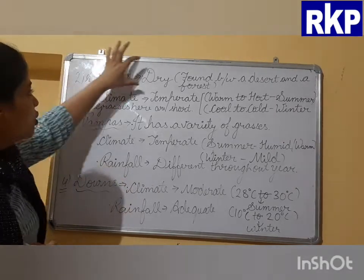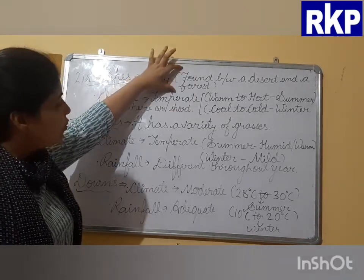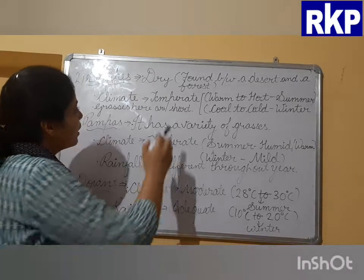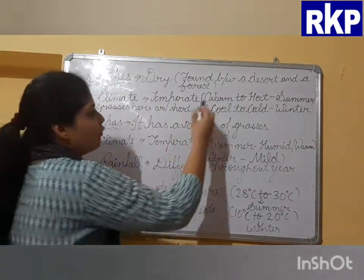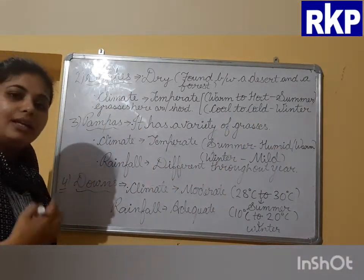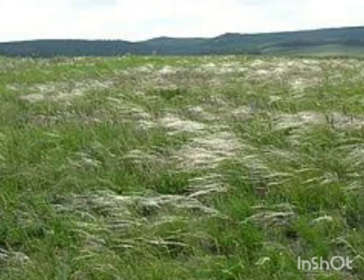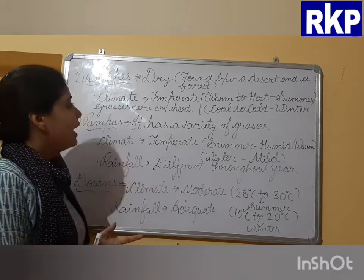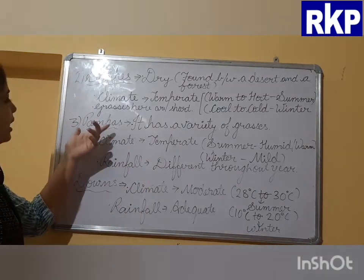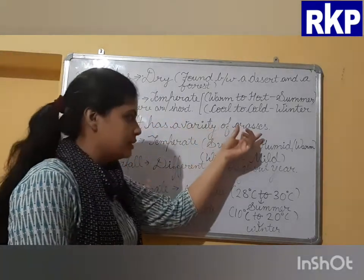Steppes are dry stretches of land covered by grasses, found between the desert area and the forest area in Eurasia. The climate is temperate — warm to hot in summer and cold in winter. The grasses found here are short, and one important fact about Steppes is that they receive little rainfall.